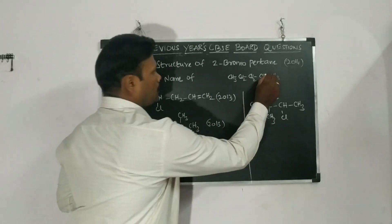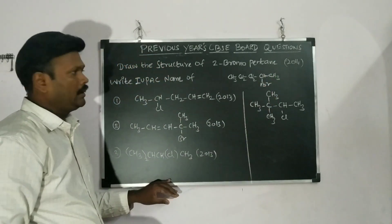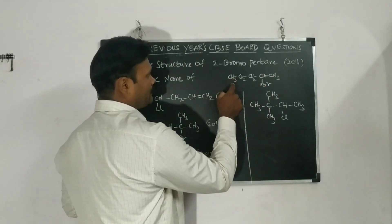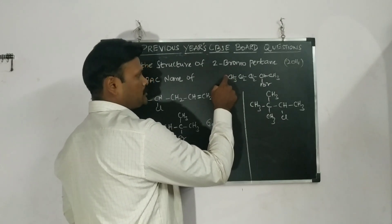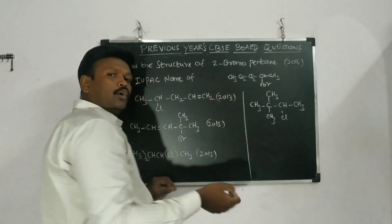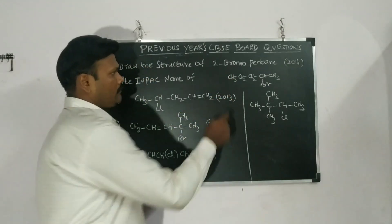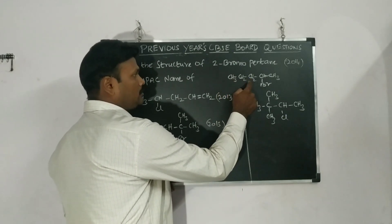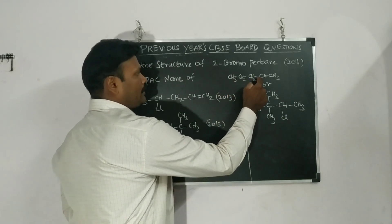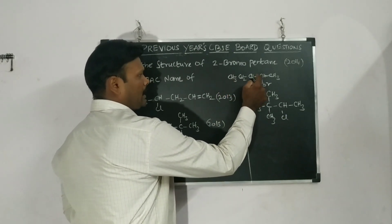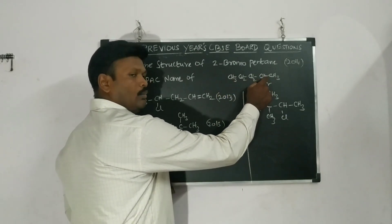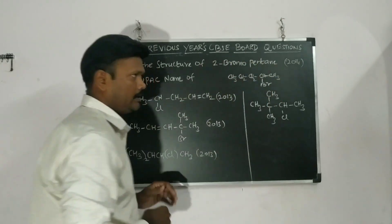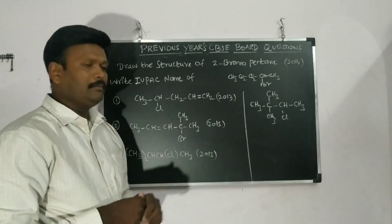This is called 2-bromopentane. Now we can satisfy the hydrogen with the carbon valency. The first carbon should have four valencies, so we put three hydrogens here. This carbon already has one, two, three bonds, so the remaining one hydrogen we put here, and CH3 at the end. That is 2-bromopentane, asked in the year 2014.